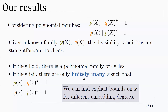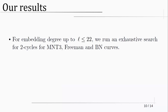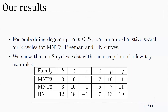We took all known families not known to form cycles and ran exhaustive search within these intervals for all values of potential partner curves, up to embedding degree 22. We didn't find any new cycles except for some toy examples with p and q equal to 19 and 11 — tiny values with no cryptographic interest. Beyond these three, there were absolutely no cycles found within the interval. Since we are sure there are no cycles outside the interval, we can conclude that these families do not lead to pairing-friendly cycles at all.